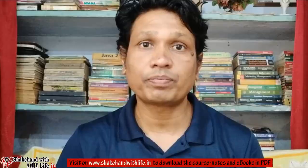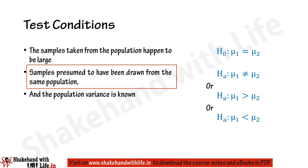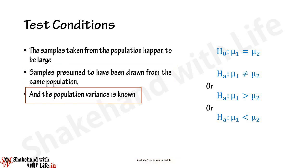There may be different situations under which the significance of difference between two population means can be tested. Here in this video we will study the hypothesis testing of difference between two population means when the samples are large, presumed to have been drawn from the same population, and the population variance is known. In this type of test condition we use Z-statistic, and the equation is given as: